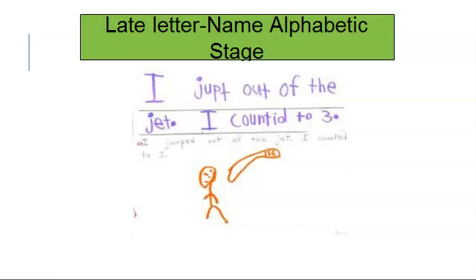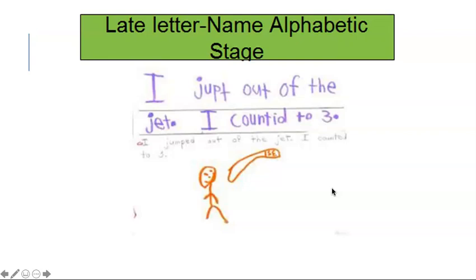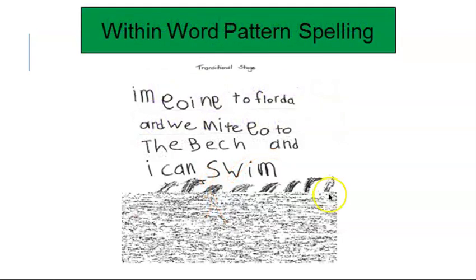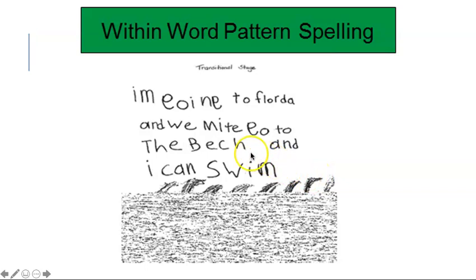In the late letter-name alphabetic stage you can see a little more written rules incorporated — like capitalization and punctuation — so it's a little more advanced than the prior stage. With word-pattern spelling, or the transitional stage, you can see there's still some invented spelling going on and capitalization may not be perfect, but the sentence is longer than what we saw before.